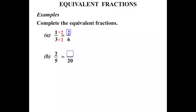The next one, 2 fifths equals something over 20. Again, looking at our bottom numbers, our denominators, the 5 we've turned into a 20 by multiplying by 4. So if we multiply the bottom by 4, we multiply the top by 4 as well.